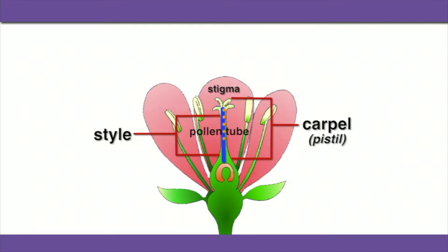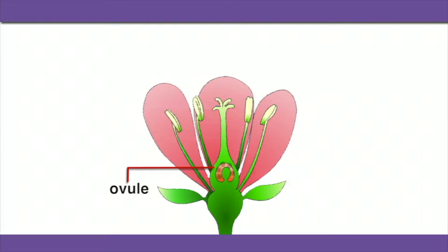The pollen grain travels down the tube, eventually reaching the ovule at the base of the carpel. After the male gamete fertilizes the female gamete in the ovule, seed and fruit development begins.